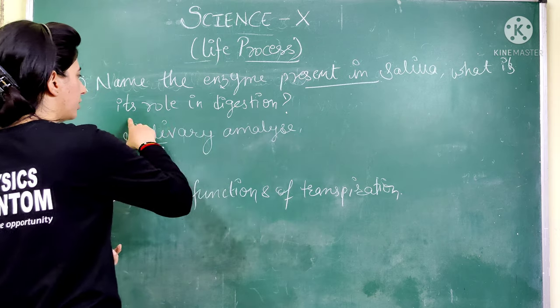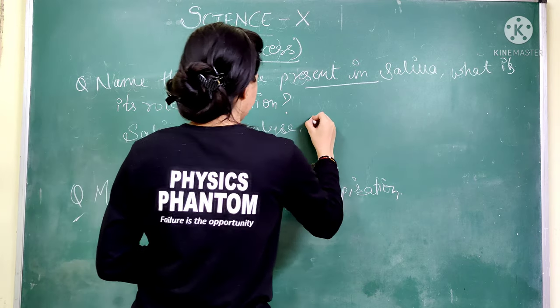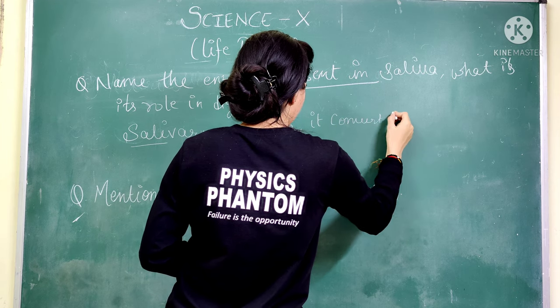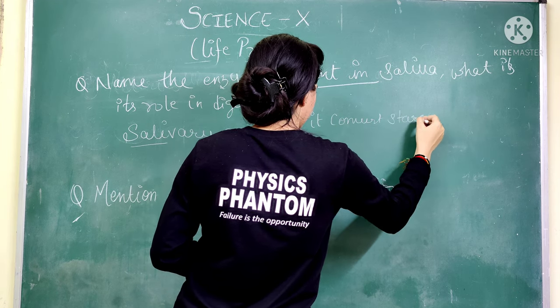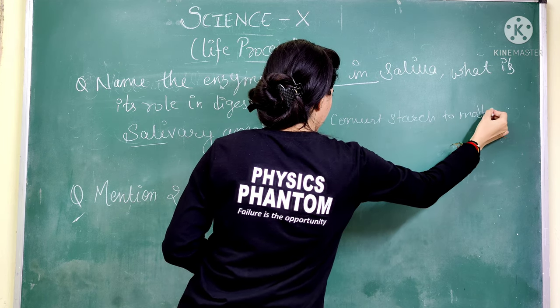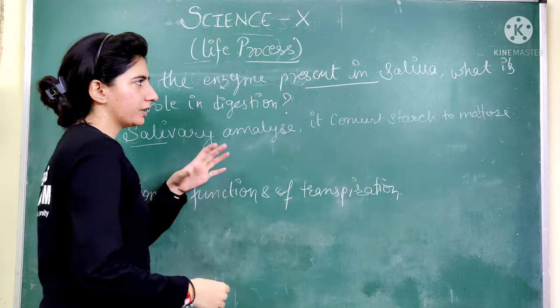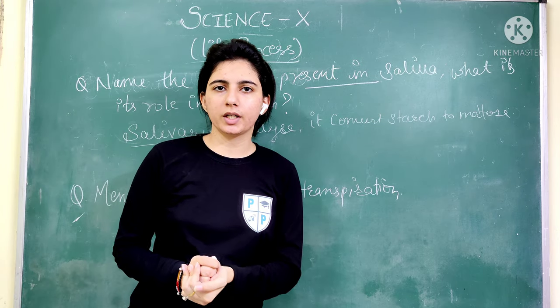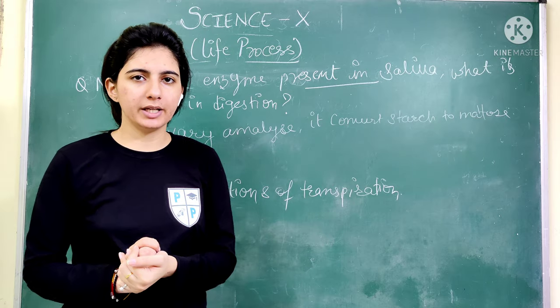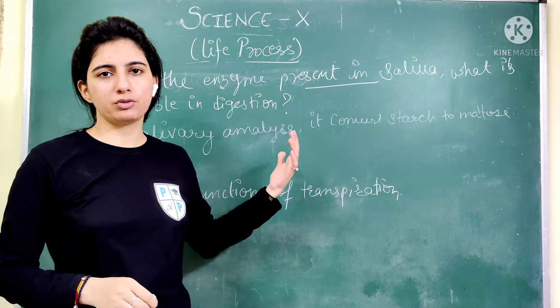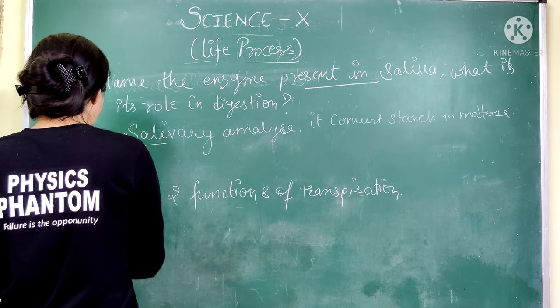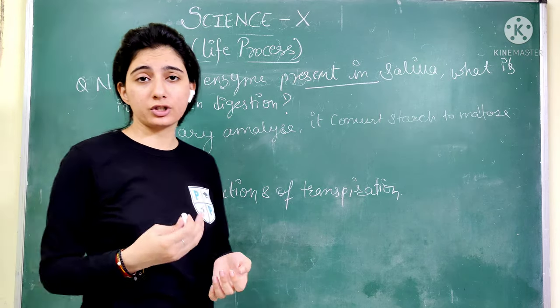What role does saliva play? It converts starch to maltose. The saliva that is present in our tongue is very important. Whatever you eat, the teeth break it into small parts, and then saliva starts its function. So here the answer is salivary amylase.